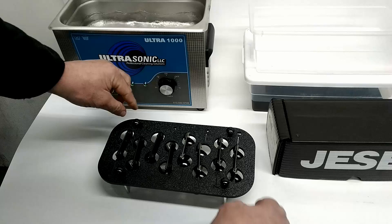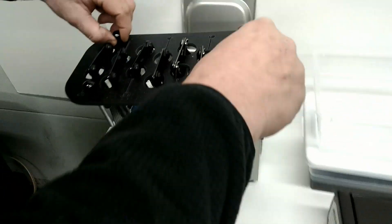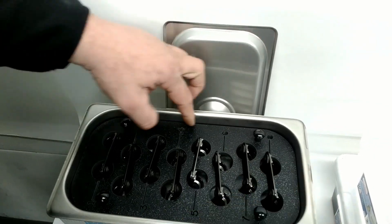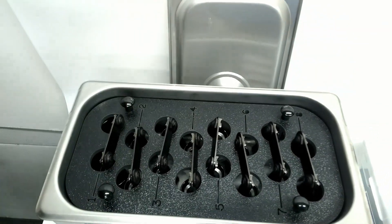So now that we have it in our fixture we're going to take our fixture and set it down in the tank. You notice that we have the roller lifters that actually go down inside the solvent and we're going to clean just the roller ends.